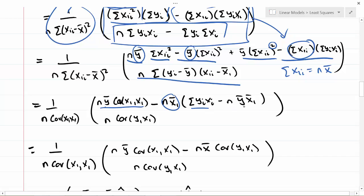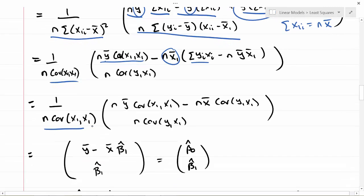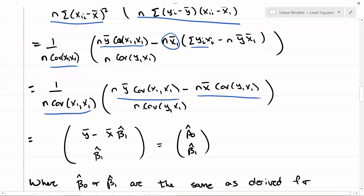This term right here, summation x_1i is n x-bar. If I factor it out there, and I have two of them, I can get n x-bar, and that's summation y_i times x_i. That's that term. Then n y-bar x_1 bar, after I've factored out one of the elements of the square. Again, I can rewrite this term as the covariance of x with itself. What I wind up with is n covariance of x with itself, n y-bar times the covariance of x with itself, minus n x-bar times the covariance of y and x, and n times the covariance of y and x.